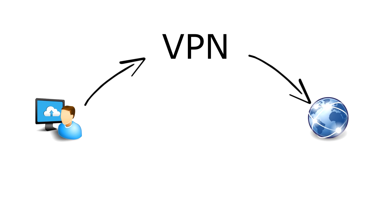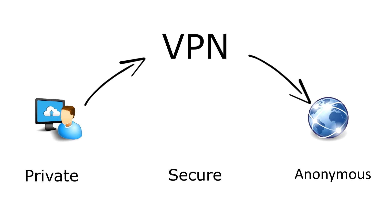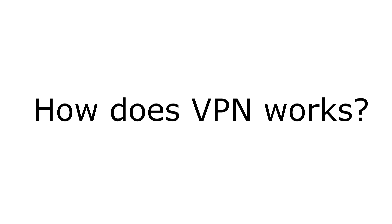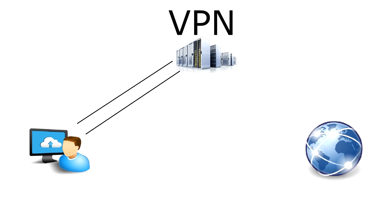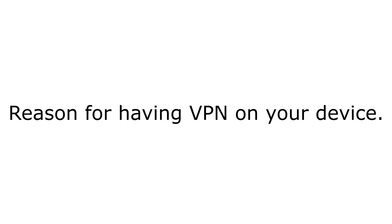Now, how does a VPN connection work? VPN creates a secure tunnel between your device and the server you're connected to. It encrypts the data that you send, and through VPN the data gets decrypted and sent back to you.